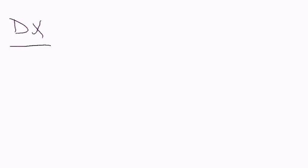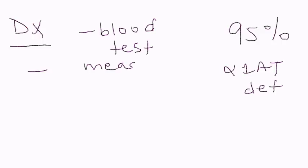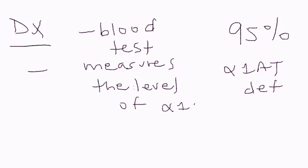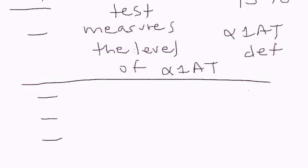Diagnosis of this condition is actually quite difficult. If somebody has symptoms of emphysema, COPD, or chronic bronchitis, you're not typically going to think of alpha-1 antitrypsin. In fact, 95% of people with alpha-1 antitrypsin deficiency are never diagnosed. Diagnosis is made with a simple blood test that measures the level of the alpha-1 antitrypsin enzyme.